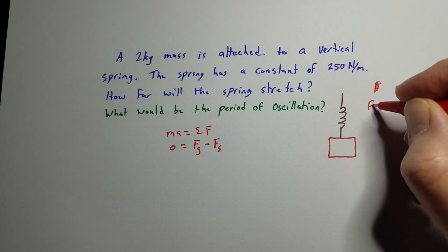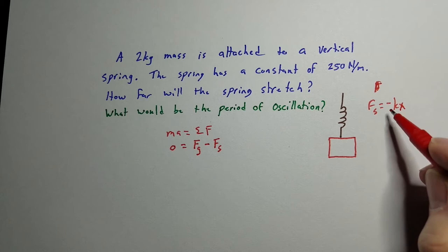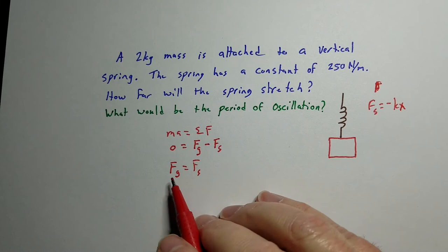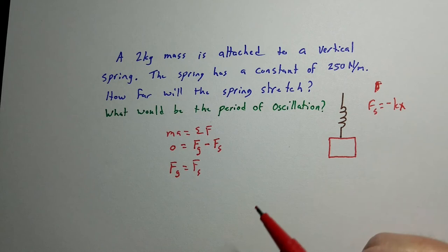So I don't like when they do force on a spring equals minus kx. I actually don't like that negative sign there. I prefer it here. It makes more sense to me. But what happens is if we move this over, we get this, where weight will be equal to the force from the spring because it's in equilibrium. It's just kind of sitting there.